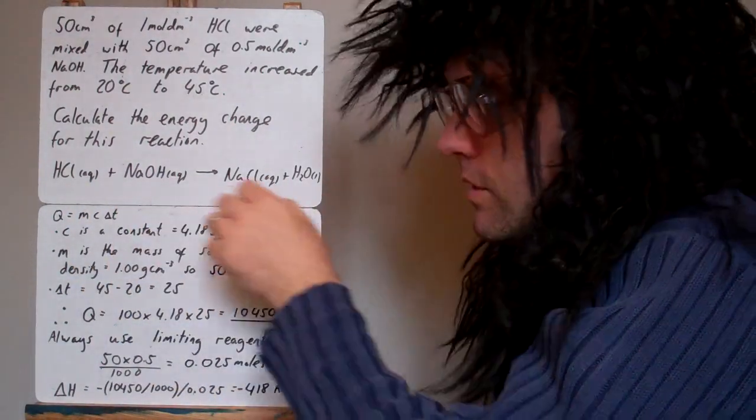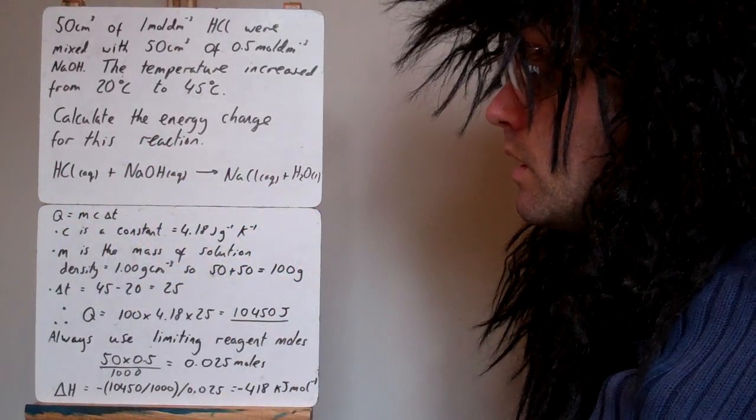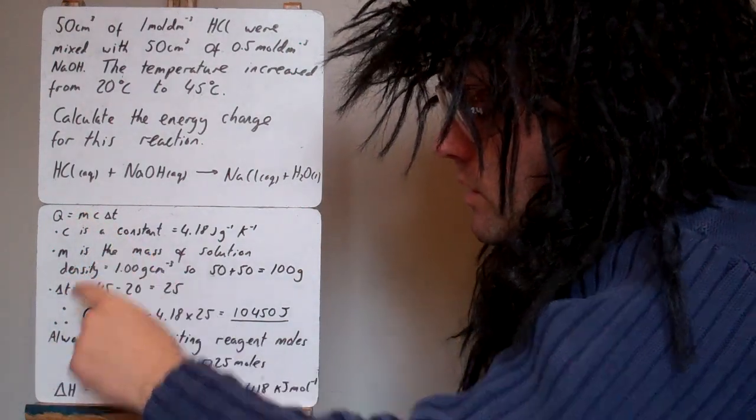Do a balanced equation first, make sure you balance it. It's all one to one here, so it's quite simple in this case. So we're going to use this first, then Q equals MC delta T.